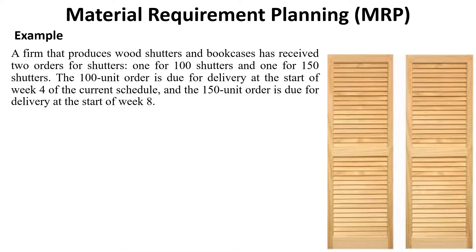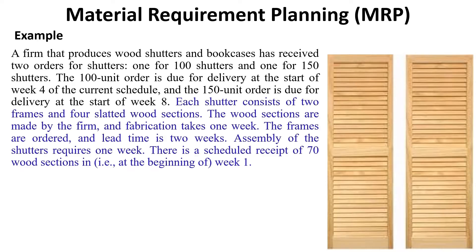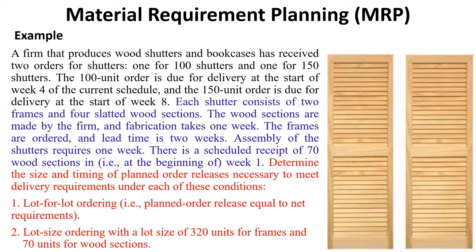Let us solve an example. A firm that produces wood shutters and bookcases has received two orders for shutters: one for 100 shutters and one for 150 shutters. The 100-unit order is due for delivery at the start of Week 4, and the 150-unit order is due for delivery at the start of Week 8. Each shutter consists of two frames and four wood sections. The wood sections are made by the firm and fabrication takes one week. The frames are ordered and the lead time is two weeks. Assembly of the shutters requires one week. There is a scheduled receipt of 70 wood sections at the beginning of Week 1. Determine the size and timing of planned order releases under two conditions: (1) lot-for-lot ordering, and (2) lot-size ordering with a lot size of 320 units for frames and 70 units for wood sections.